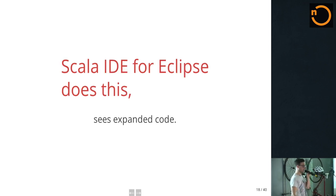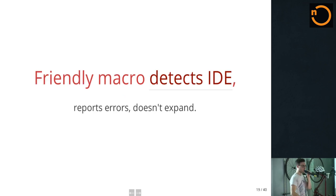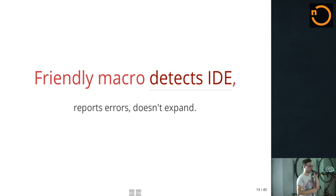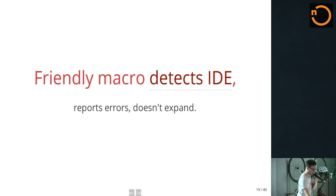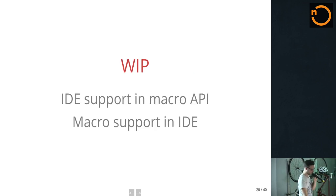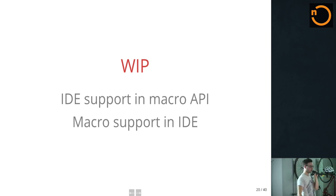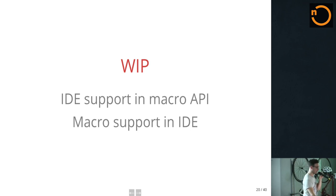The Scala IDE for Eclipse does this because it's running a real Scala compiler — it does do that, and it sees the expanded code, which then confuses it a little bit. So if you're writing a macro, you might want to try detecting the IDE and reporting your errors, but don't expand — because it'll not create an ideal experience for someone using your macro. We're currently working on actually supporting IDEs in the macro API and giving you better tools for playing nice with both JetBrains and our own offerings.